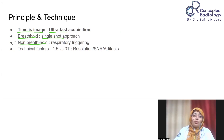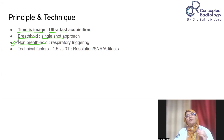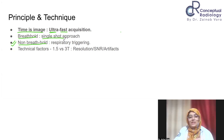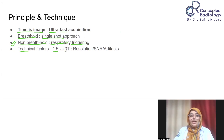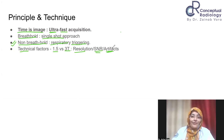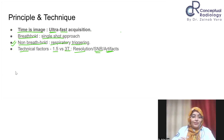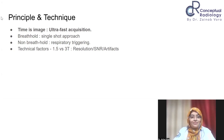The third approach is the non-breath-hold sequence, which is the most advanced. The patient only needs to hold still for about three to four seconds, acquired with the help of respiratory triggering. Regarding technical factors, 3 Tesla provides higher resolution and signal-to-noise ratio compared to 1.5 Tesla, but also comes with more susceptibility artifacts. Good quality is achievable at 1.5T, but 3T is even better.